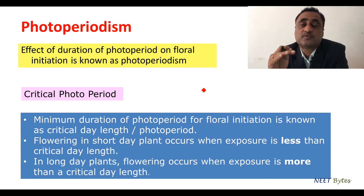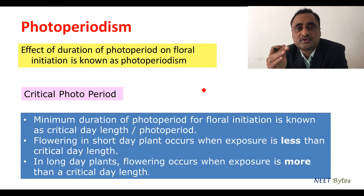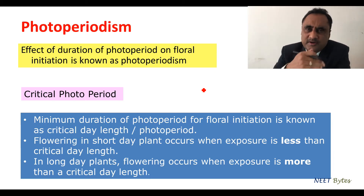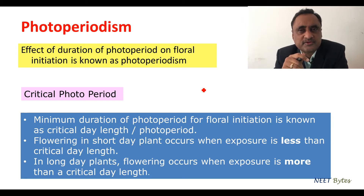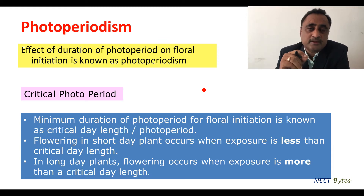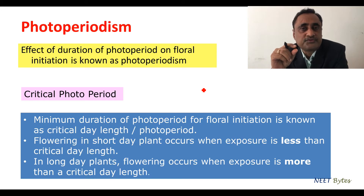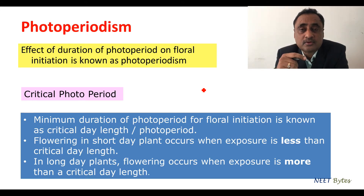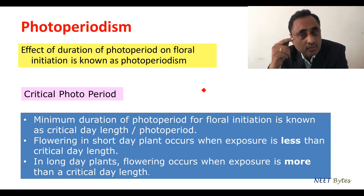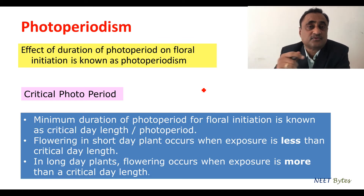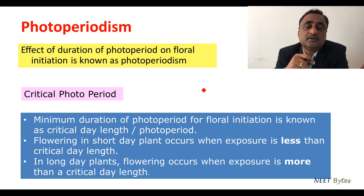There are two groups of plants: long day plants and short day plants. Long day plants are those in which flowering occurs during summer, when days are long. Short day plants are those in which the day length is small or short, as observed in winter. In short day plants, flowering occurs only when the exposure is less than the critical day length, and in long day plants, flowering occurs only when exposure is more than the critical day length. So the critical day length is a threshold point required to initiate the flowering process.